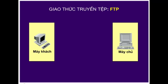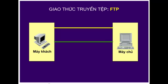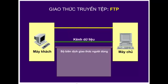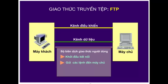Giao thức truyền tệp FTP được dùng để trao đổi tệp giữa các máy tính và để chia sẻ tệp trên mạng. FTP thiết lập hai kết nối giữa máy chủ và máy khách. Kết nối thứ nhất được dành riêng để trao đổi câu lệnh và câu trả lời của FTP. Kết nối thứ hai dùng để truyền dữ liệu. Bộ biên dịch giao thức người dùng khởi tạo kết nối, gửi lệnh đến máy chủ và xử lý trả lời của máy chủ. Kênh điều khiển được cả hai bên sử dụng để trao đổi thông tin điều khiển.